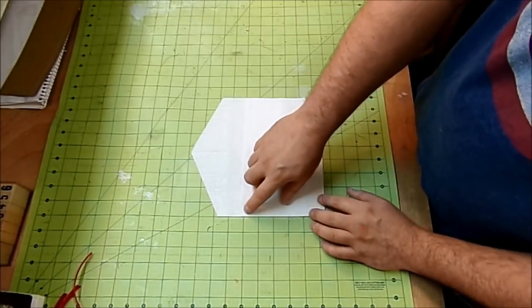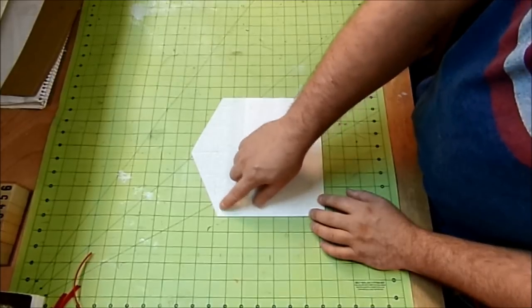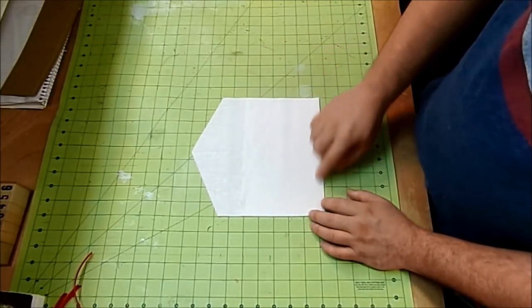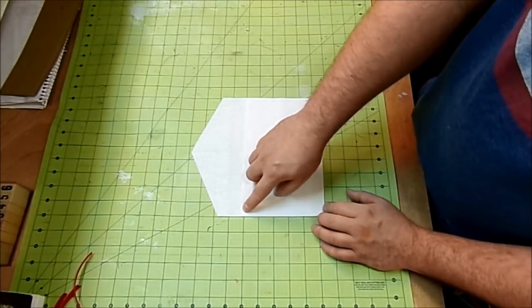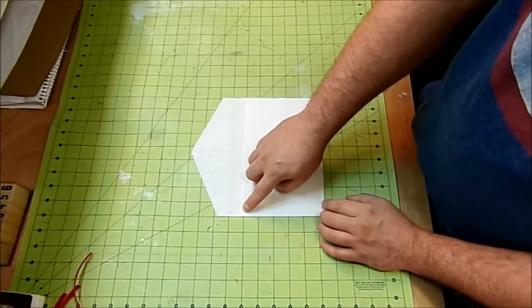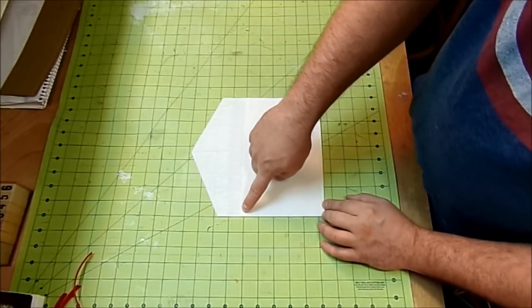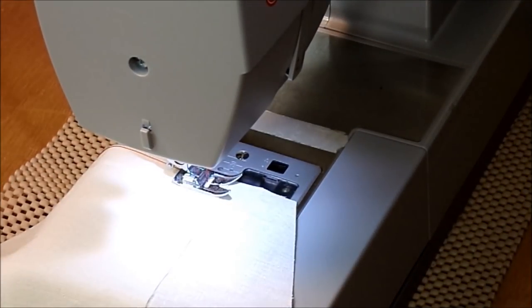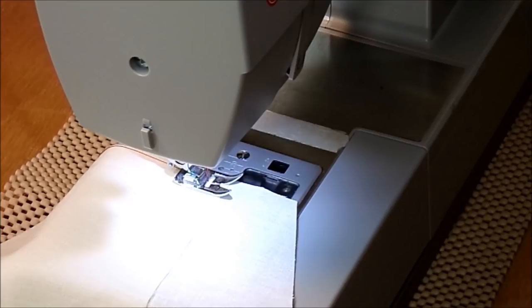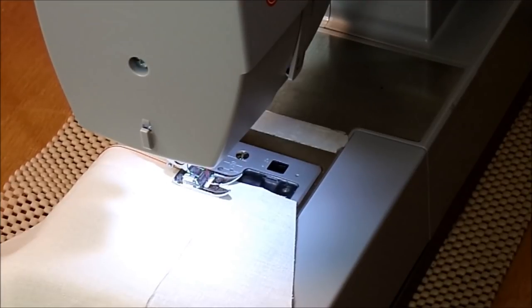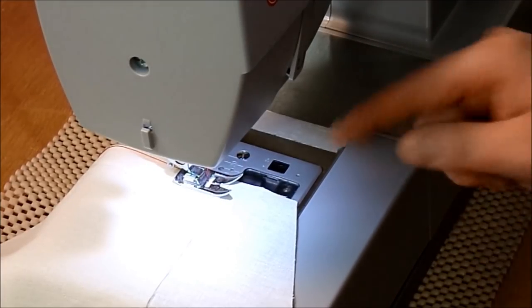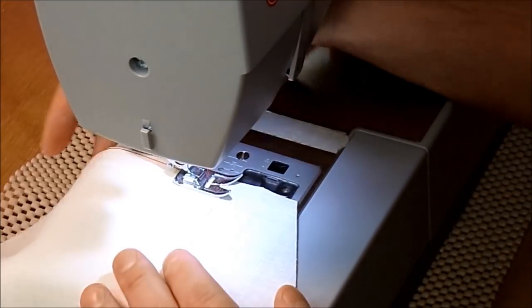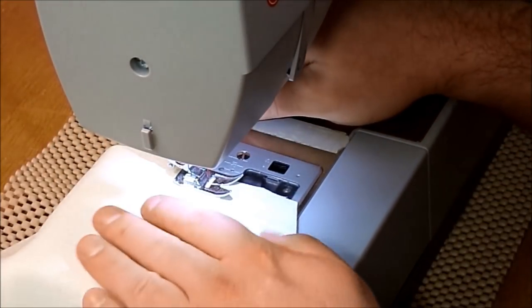So now that I have my bottom pressed, I'm gonna start right here and sew all the way around my envelope. I'll be using red thread with a straight stitch and a quarter-inch seam allowance. All right, so I'm over here at my sewing machine. I'll be using a straight stitch, my length is a two, a quarter-inch seam allowance, and I have red thread in my machine.